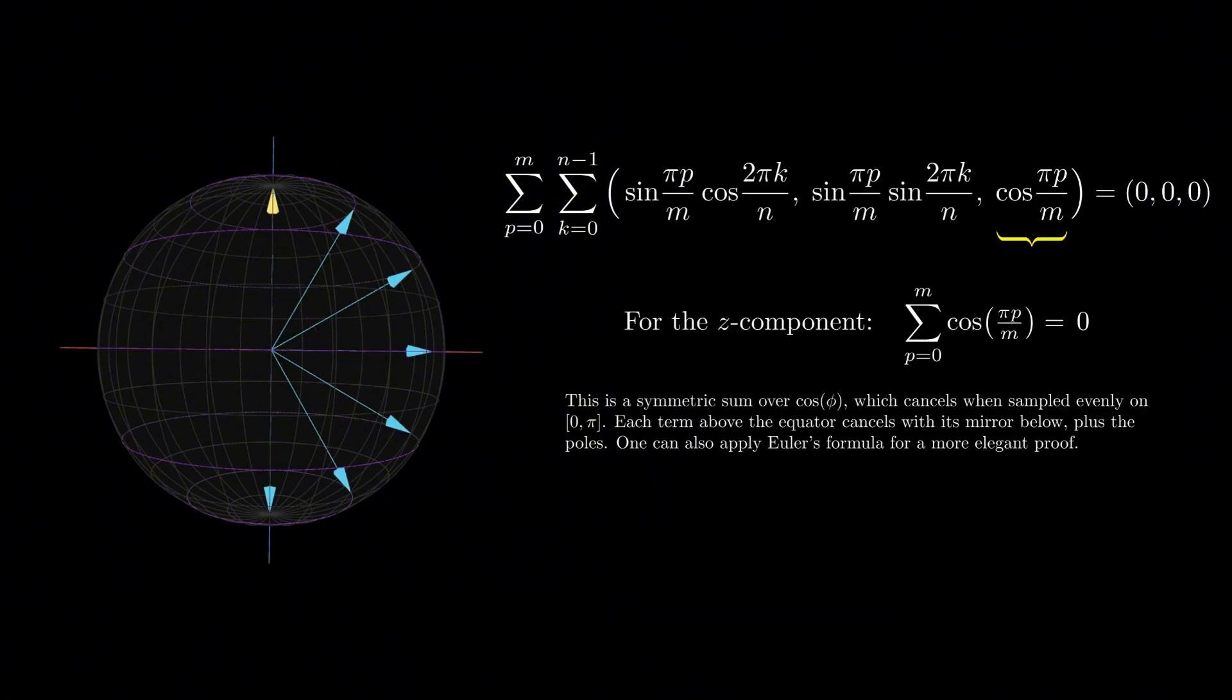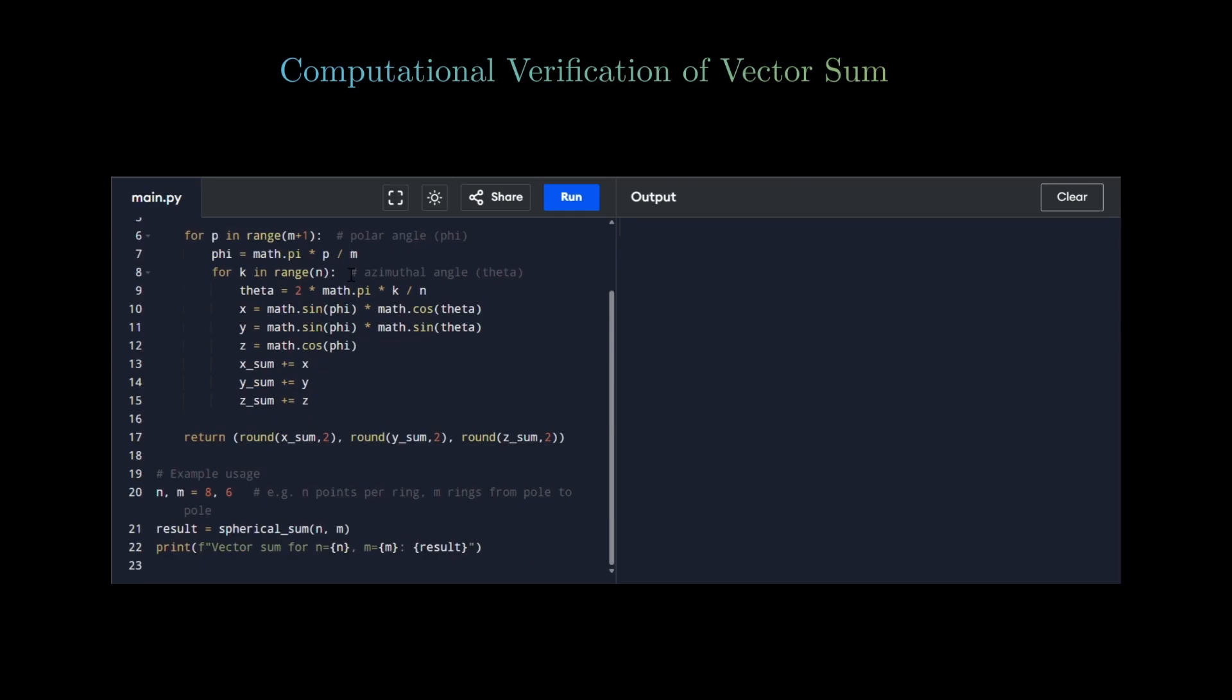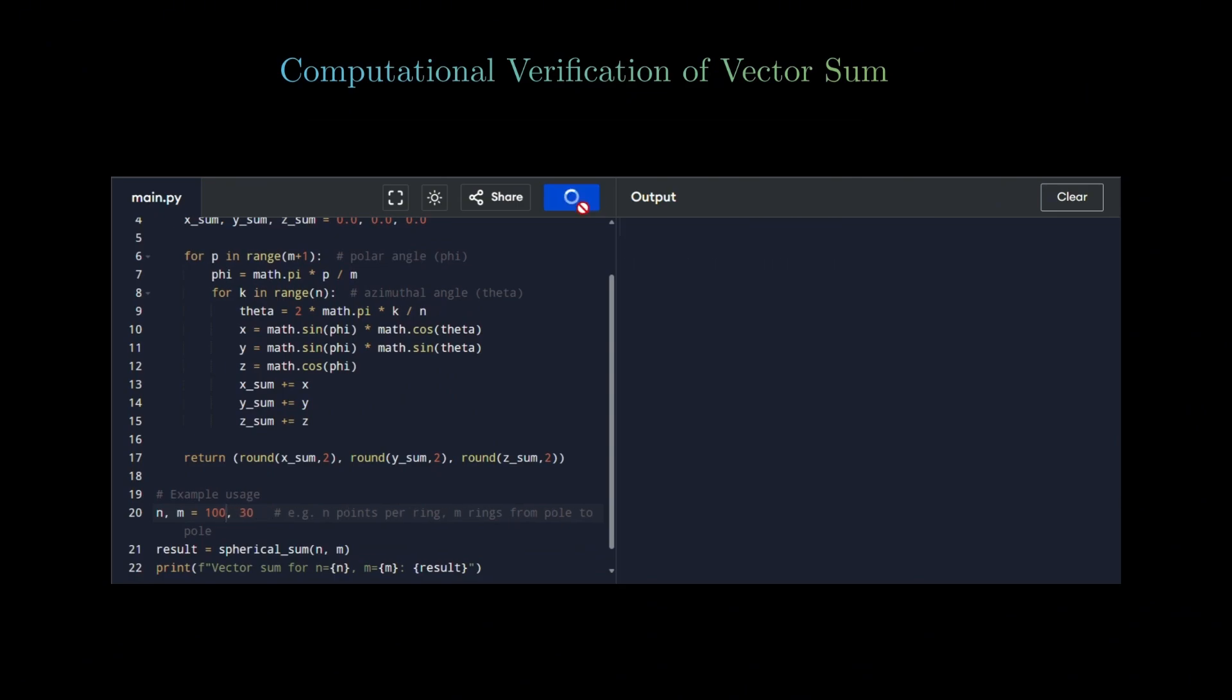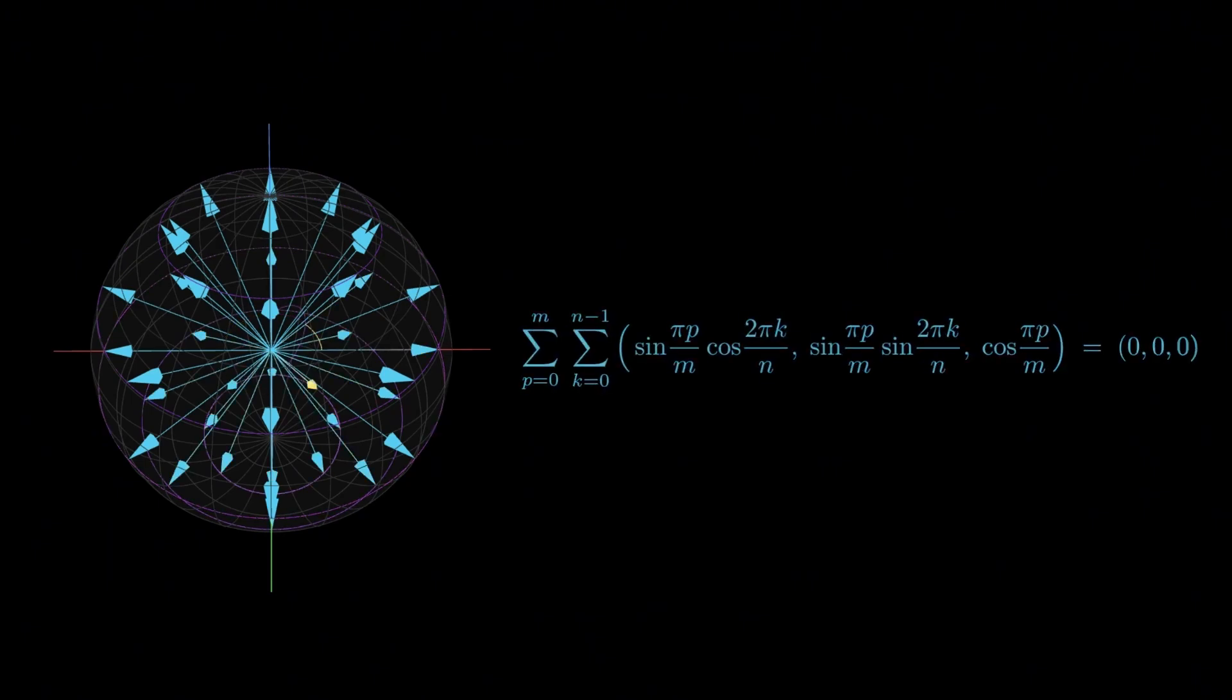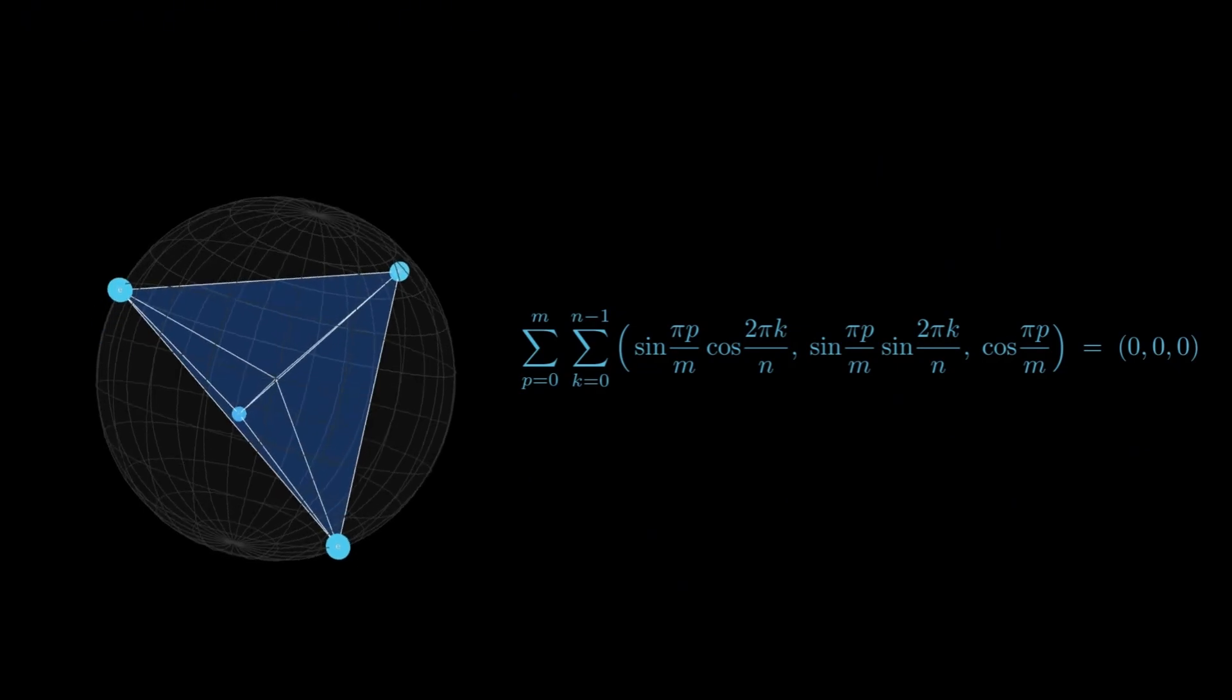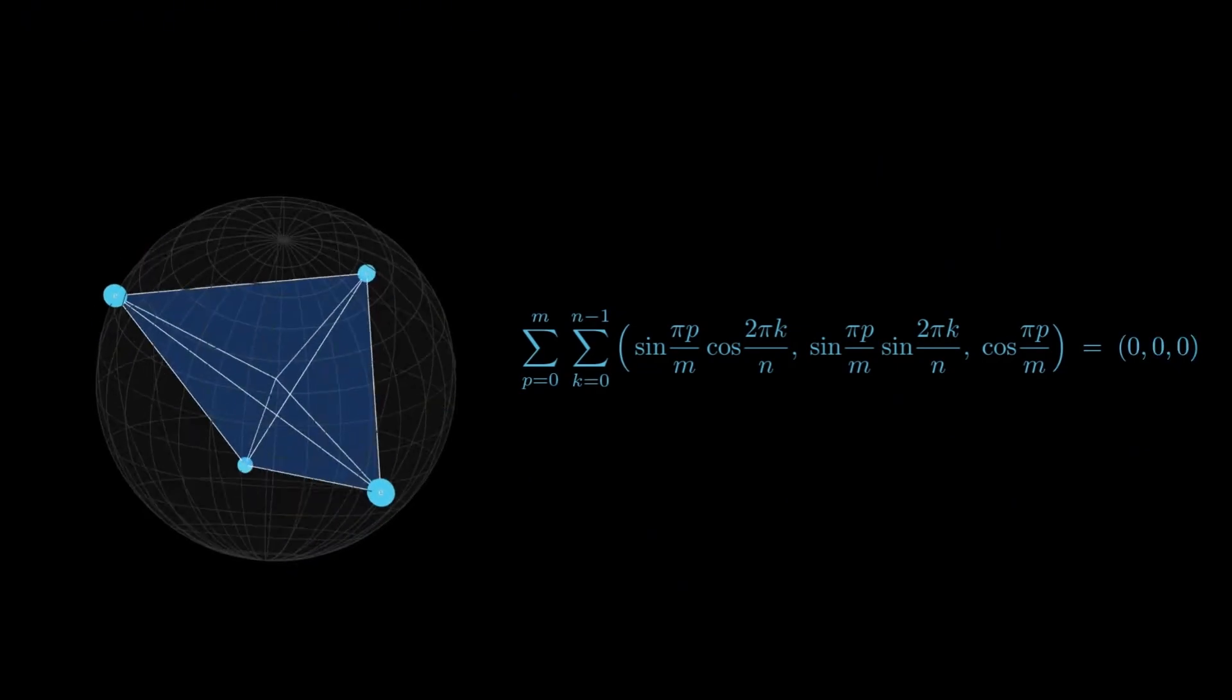To verify, we can even run a simple Python program using a nested loop for different values of n and m. But here's a problem: this double sum doesn't always capture the lowest energy configurations in Thompson's problem, though it does sum to zero. For example, in the case of the tetrahedron, no choice of m and n in the double sum will reproduce it, because it's not aligned with the latitude-longitude symmetry.